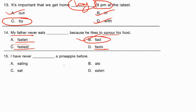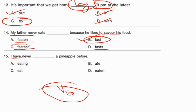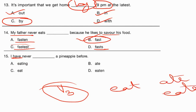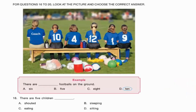'I have never ___ a pineapple before.' The auxiliary 'have' indicates present perfect tense. With present perfect tense, always use the main verb in V3 form. The three forms of 'eat' are eat, ate, eaten — so V3 is 'eaten.' The correct answer is eaten: 'I have never eaten a pineapple before.'